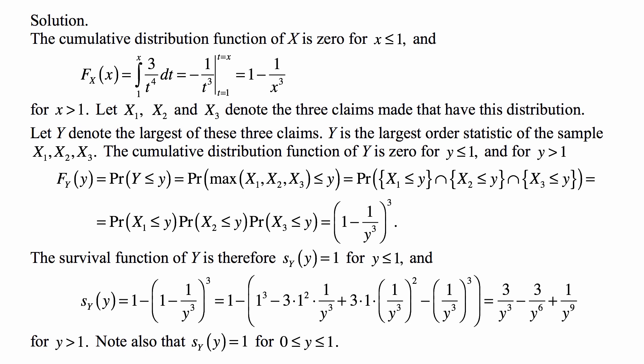Based on the information we have, we can find the cumulative distribution function of random variable X. It is 0 for x less than or equal to 1, and for x greater than 1, F_X(x) equals the integral from 1 to x of 3 over t to the fourth dt. The integral of 3 over t to the fourth is minus 1 over t cubed, evaluated from 1 to x, giving us 1 minus 1 over x cubed for x greater than 1.